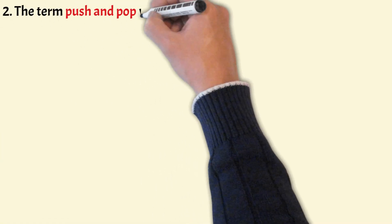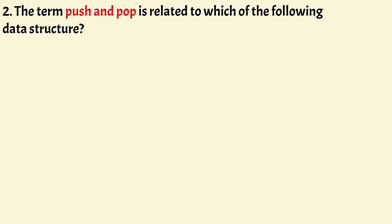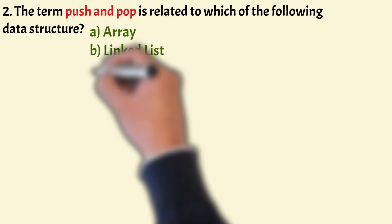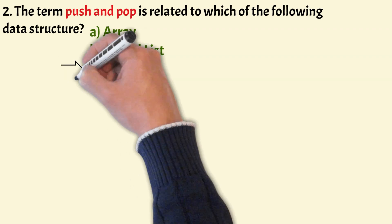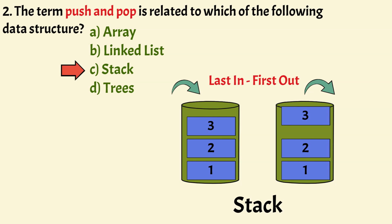Moving on to the next question. The term Push and Pop is related to which of the following data structure? The options are: Array, LinkedList, Stack, Trees. The correct option is Option C, that is Stack. The process of inserting an element in the stack is known as Push Operation, and the deletion of an element is known as Pop Operation.